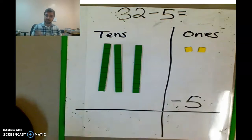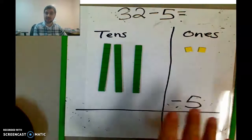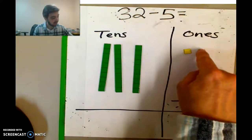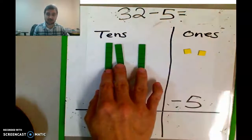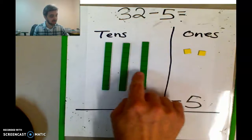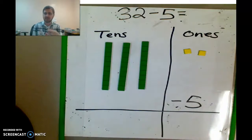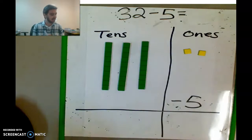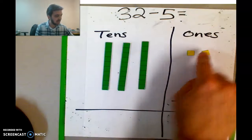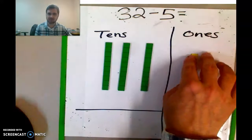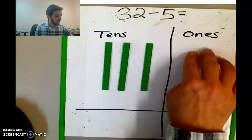Alright boys and girls, how'd you do? So you should have already worked on this. If you haven't paused the video, do it now. What we're looking at is trying to take — if you have three bags of Skittles, three bags with 10 in each and two loose Skittles, and you want to give 5 away. I want to give 5 to my other sister, Michaela. I'm like, well, I can give you these two, but I'm going to have to open up one of these packages to give you 5.